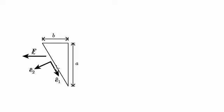The difference between this problem and many of the other problems we've seen is that here I'm not giving you the orientation of ê₁ and ê₂ in terms of some angle theta. Instead, I'm giving it in terms of two lengths, a and b, that are sides of this triangle oriented in a way that aligns with the ê₁ direction. So I'm going to have to write this vector decomposition in terms of a and b.